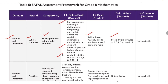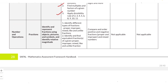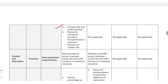The next subtopic in Number and Operations is fractions. You need to identify and represent fractions using objects, pictures, and symbols, and identify relative magnitude. Questions will cover: identifying different types of fractions — proper, improper, mixed, like, and unlike fractions; finding equivalent fractions of proper, improper, mixed, like, and unlike fractions; and comparing and ordering positive and negative fractions, including like and unlike fractions.